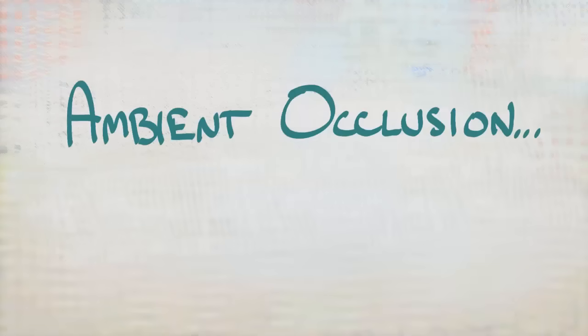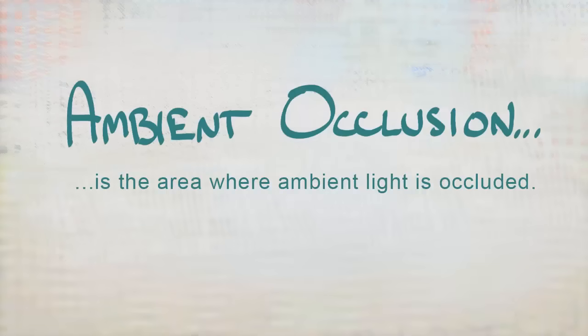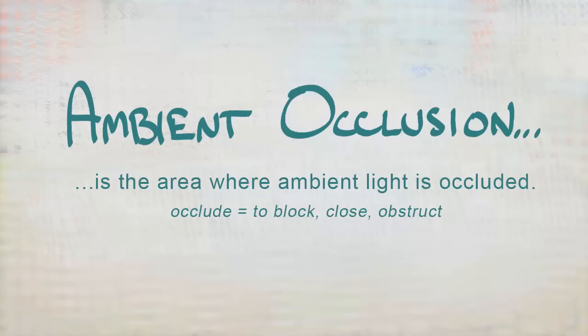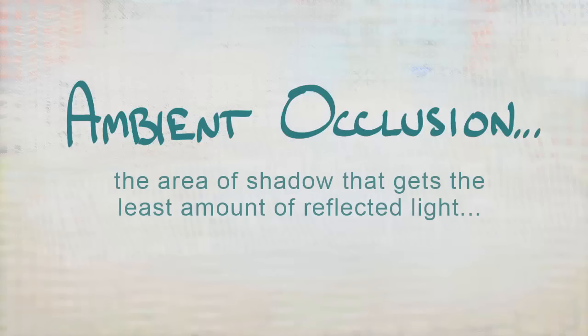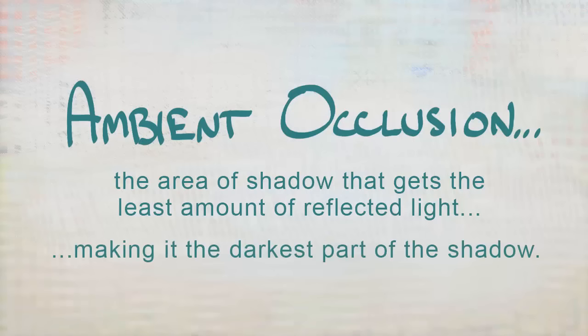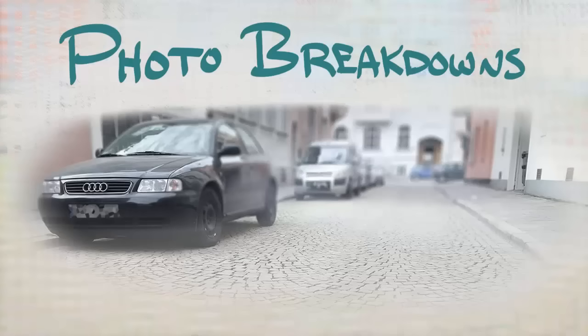That darkest area is the area of ambient occlusion. Ambient occlusion is simply the area where ambient light is occluded — and 'occlude' is just a fancy word for block, close, or obstruct. A more practical definition: ambient occlusion is the area of shadow that gets the least amount of reflected light, making it the darkest part of the shadow.